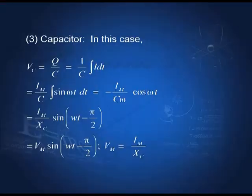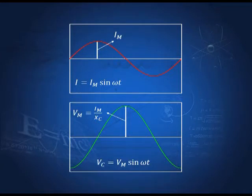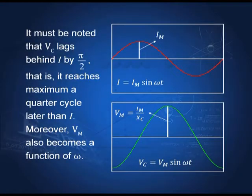What about the capacitor? The voltage across the capacitor is Q/C = (1/C)·∫I dt. Substituting and integrating, VC = (Im/XC) sin(ωt − π/2), where XC = 1/(Cω) is the capacitive reactance. The amplitude of the voltage is Im/XC and this lags behind the current by π/2 — it reaches maximum π/2 later than the current. So the voltage across the capacitor lags behind the current by π/2, with a phase difference of π/2.